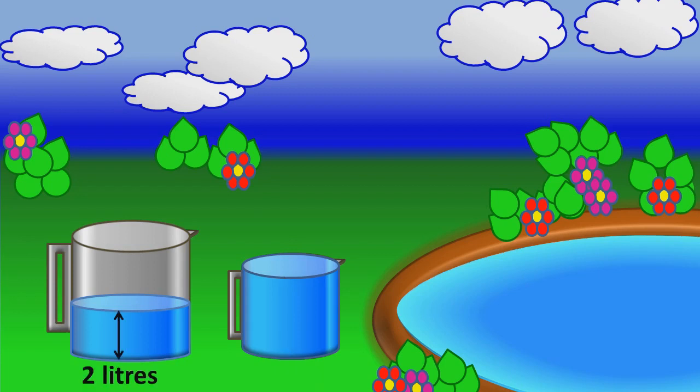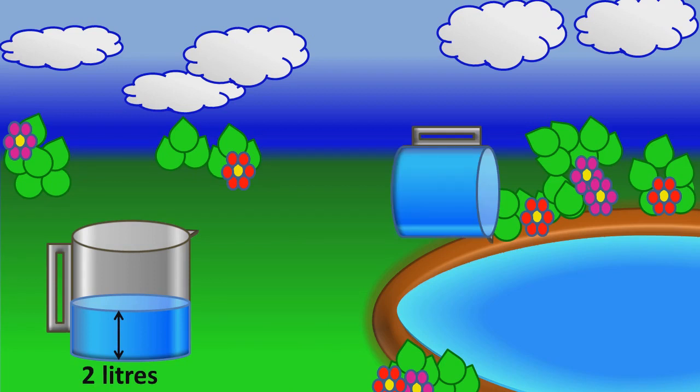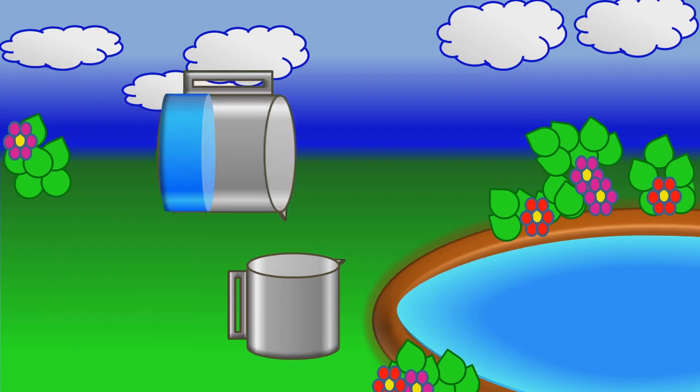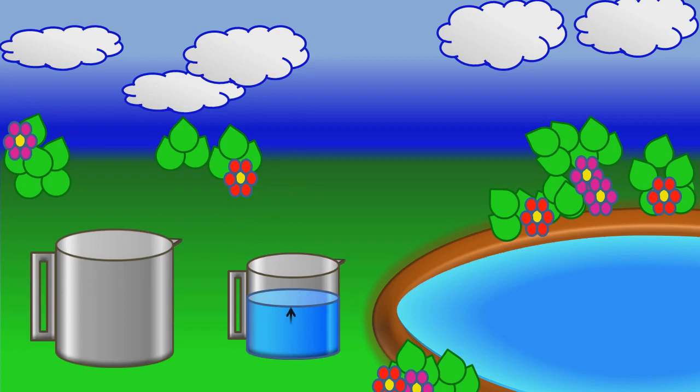Now empty the 3 liter container. Pour the 2 liters into the 3 liter container. Now 3 liter container has 2 liters of water.